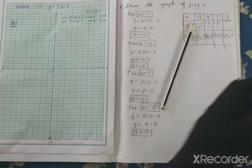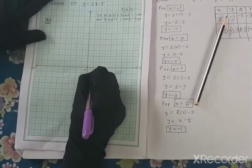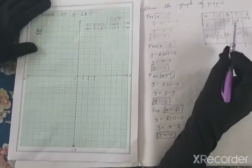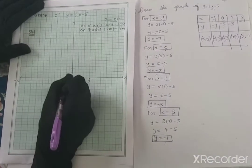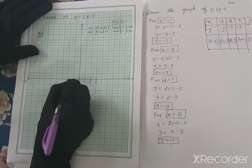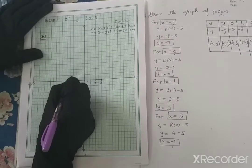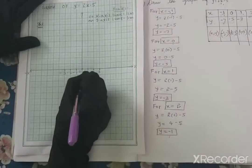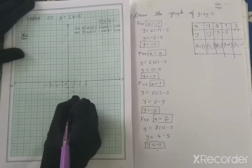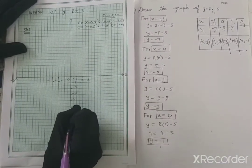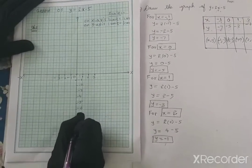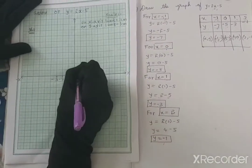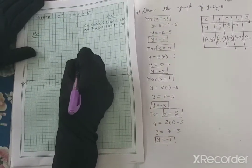On the x-axis I will take 1, 2, 3 — only till 3 because I have only till plus 2 — and also minus 1, minus 2, minus 3. For the y-axis, I have till minus 7, so I will take till minus 8: minus 1, minus 2, minus 3, minus 4, minus 5, minus 6, minus 7, minus 8. As I don't have any positive y-axis points in my table, I will just take till positive 4.